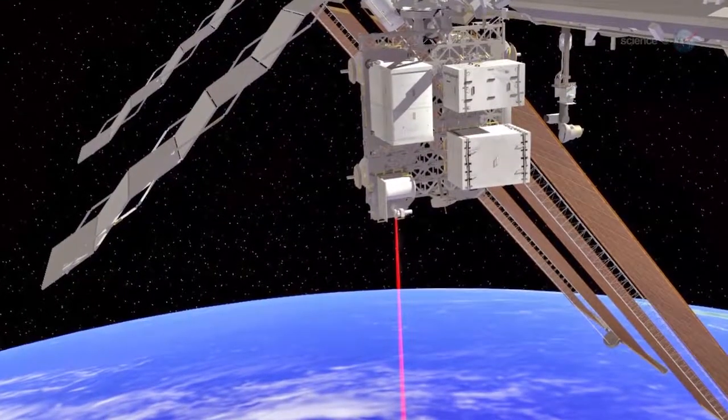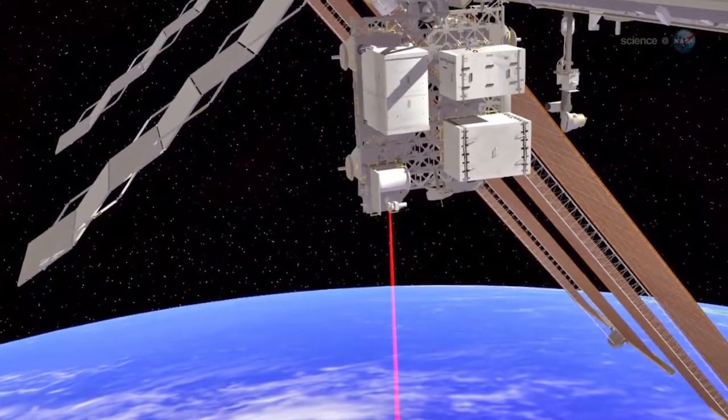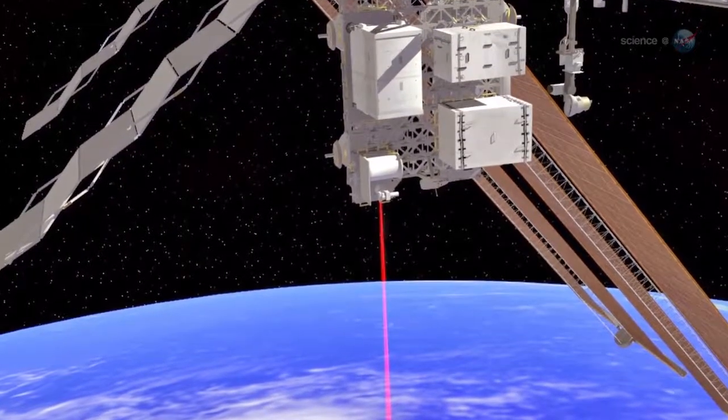During the 148-second transmission, OPALS maintained pointing to the ground station within 0.01 degrees, while tracking at speeds up to 1 degree per second.